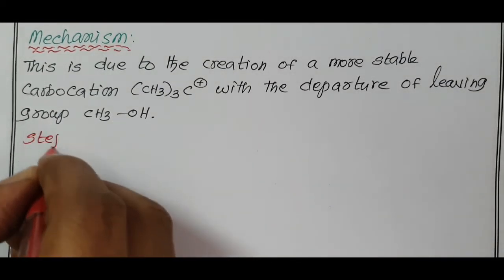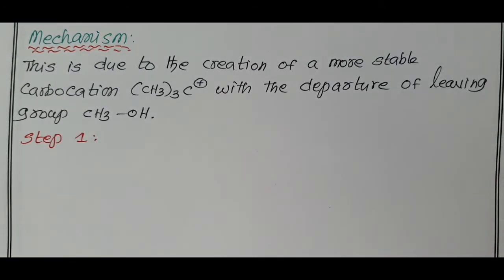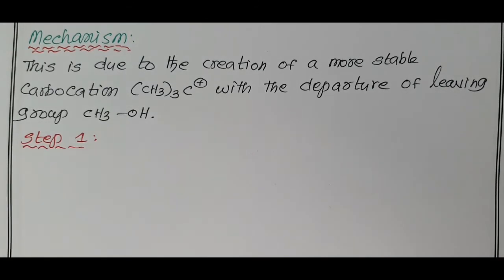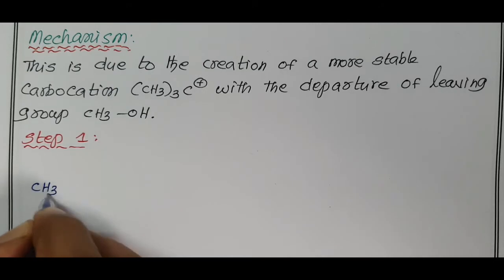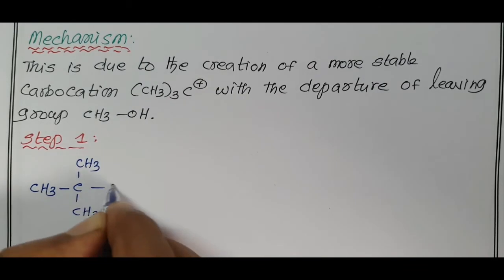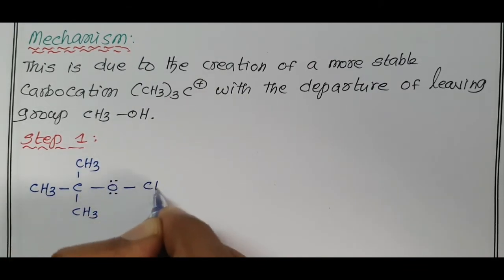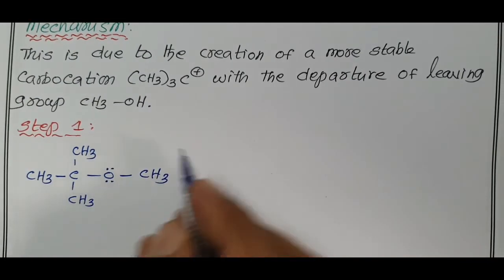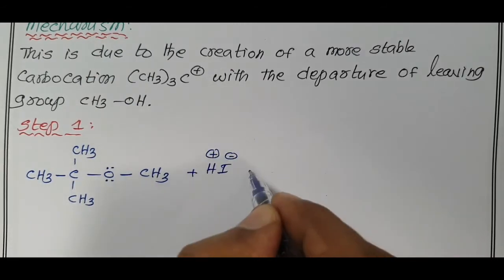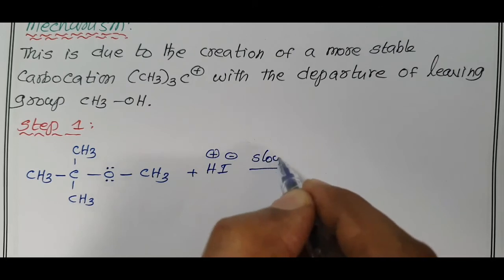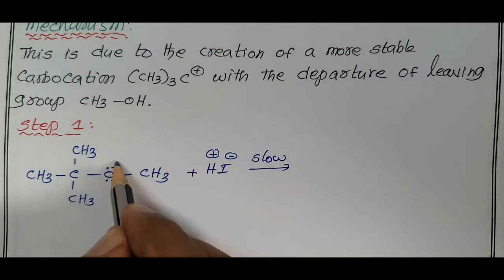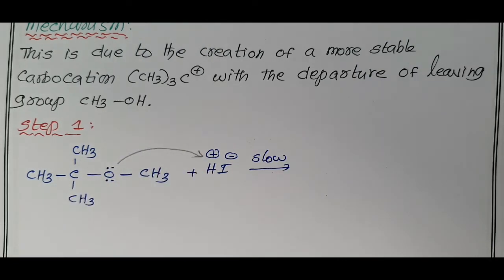Step 1, formation of tertiary butyl carbocation takes place. Our ether is CH3-C-CH3-CH3-O, there are two pair of electrons on oxygen, tertiary butyl methyl ether. When treated with H-I, H plus, it is a slow step. Second step is a fast step. The slow step is the rate-determining step. Oxygen donates a pair of electrons to H plus.